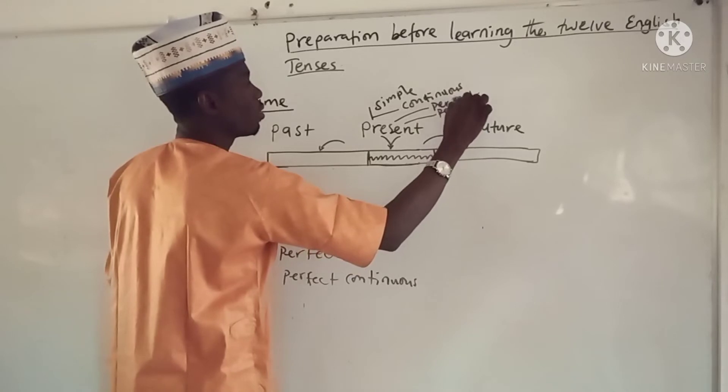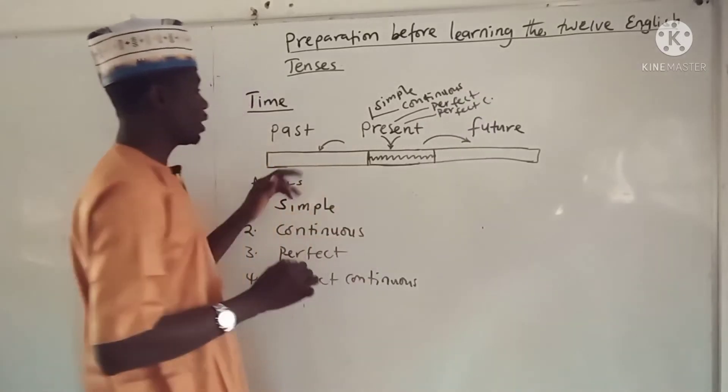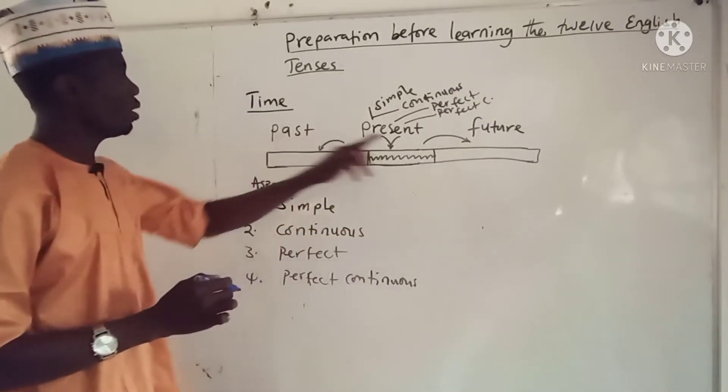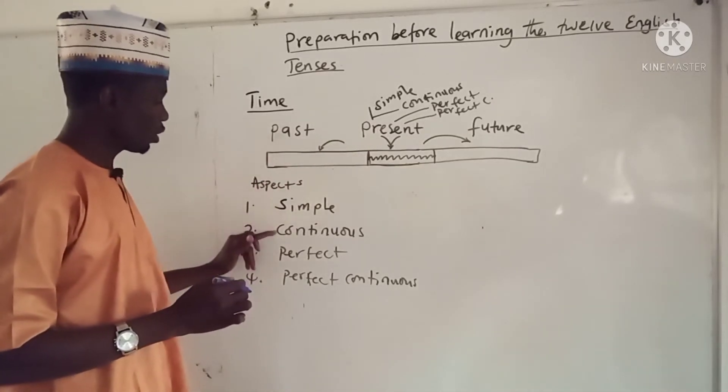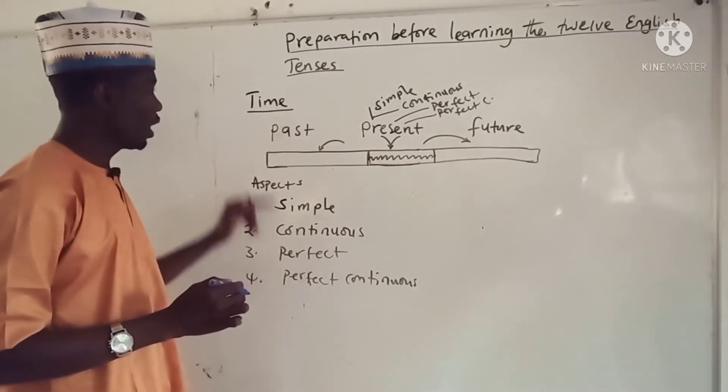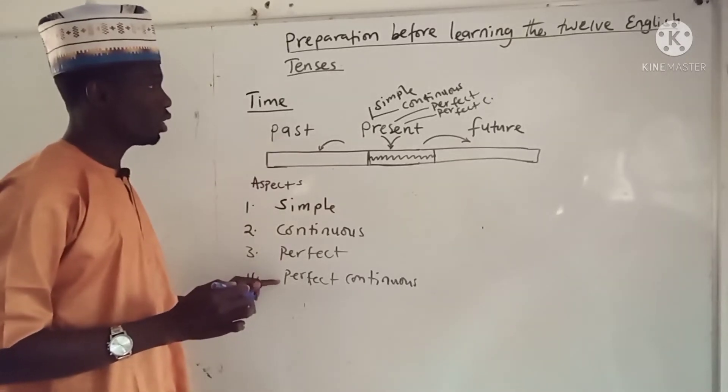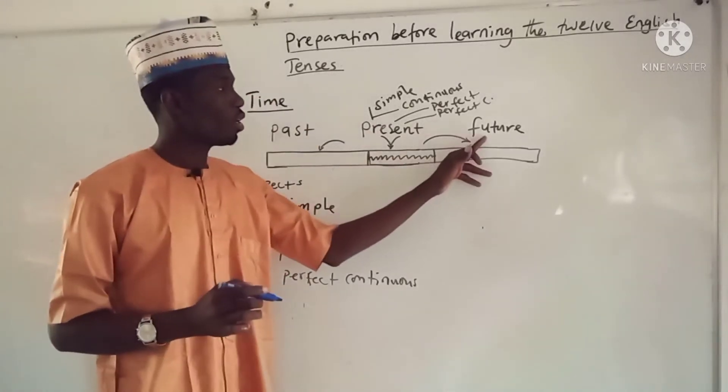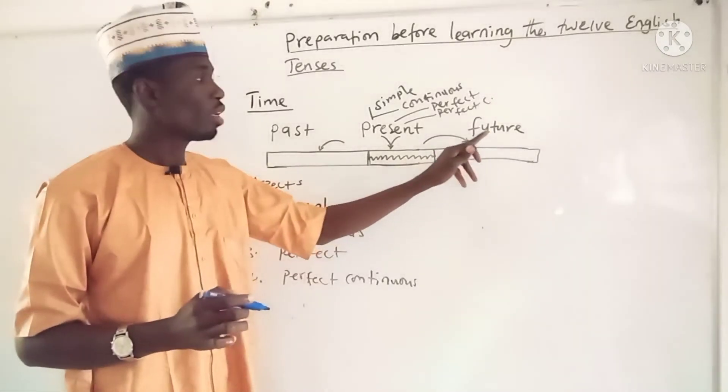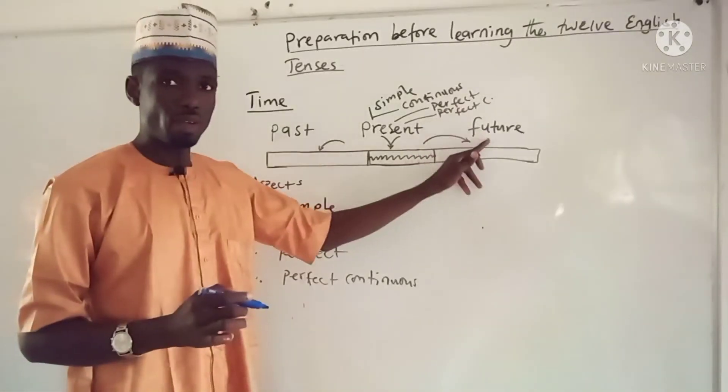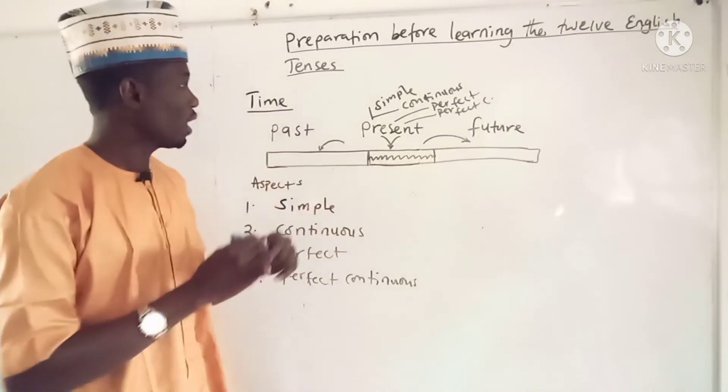And then we have the present perfect. And then we have the past: we have simple, the past continuous, the past perfect, and the past perfect continuous. When we get into the future, we are now going to talk about future simple, future continuous, future perfect, and future perfect continuous.